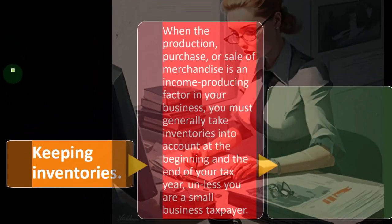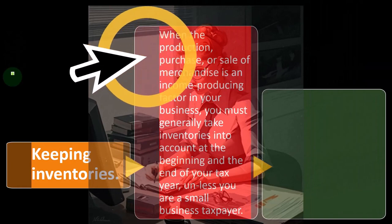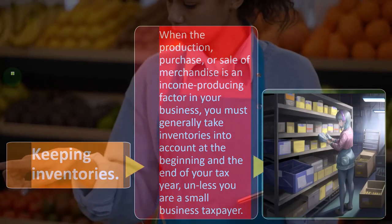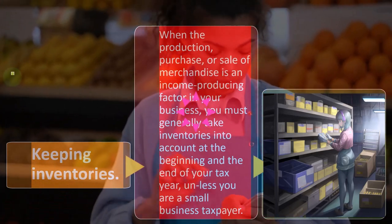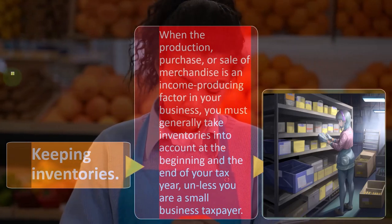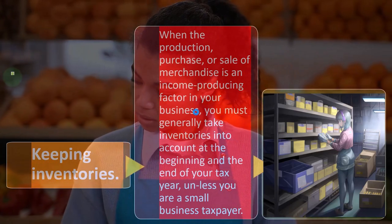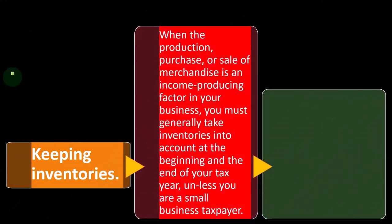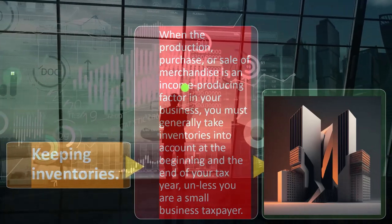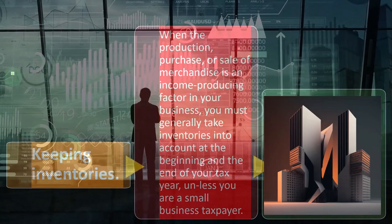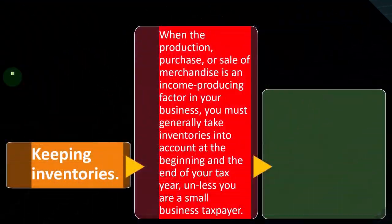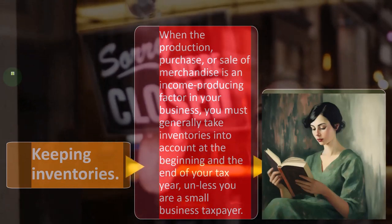Keeping inventories: when the production, purchase, or sale of merchandise is an income-producing factor in your business, you must generally take inventories into account at the beginning and end of your tax year, unless you are a small business taxpayer. If you have inventory, you generally have to buy the inventory — you might pay for it at the time of purchase but still put it on the books as an asset. It's similar to buying a large building or equipment — you capitalize it on the books as an asset rather than expensing it at the point of purchase. Inventory lends itself to the accrual method because you don't expense the consumption of the inventory until you sell it in the form of cost of goods sold.